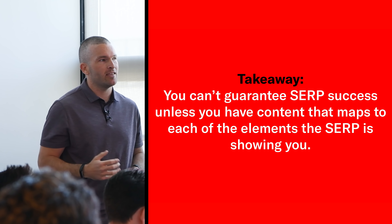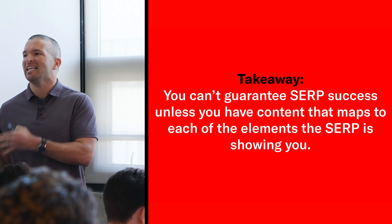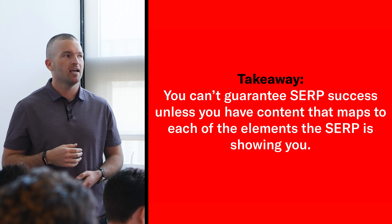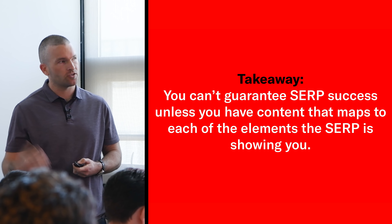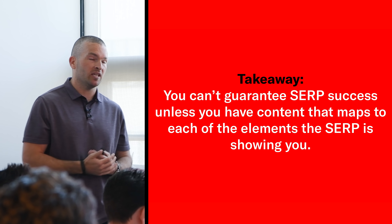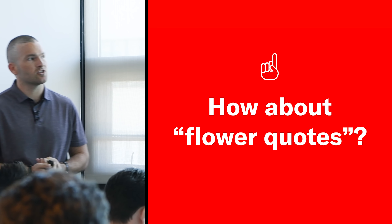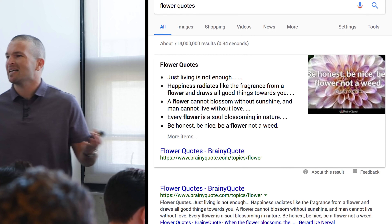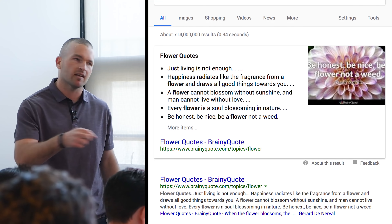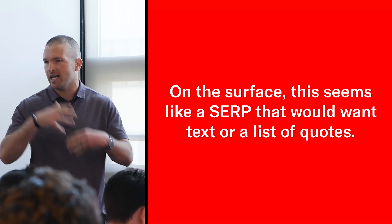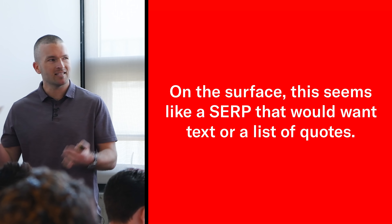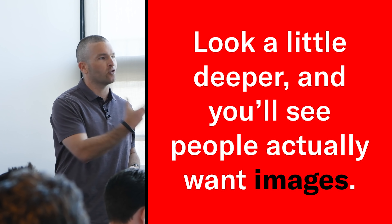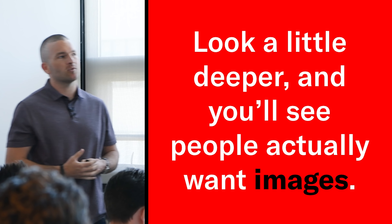The main takeaway is that you need to have content that maps to each element of the search result in order to have the highest confidence you can rank for that search. Another example is 'flower quotes.' On the surface you might think people just want a text list of flower quotes, maybe a specific image or two that makes it look nice and scannable — but on deeper inference of the search result, we can take some clues based on the structure.